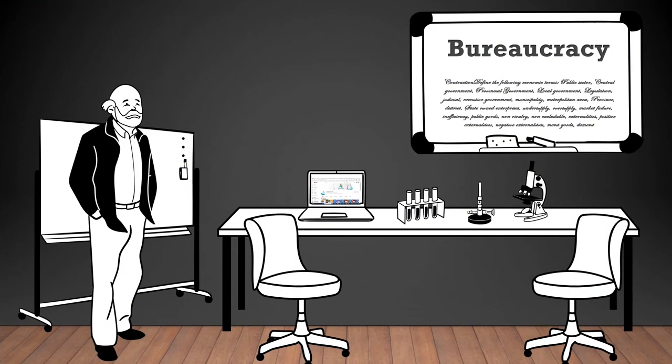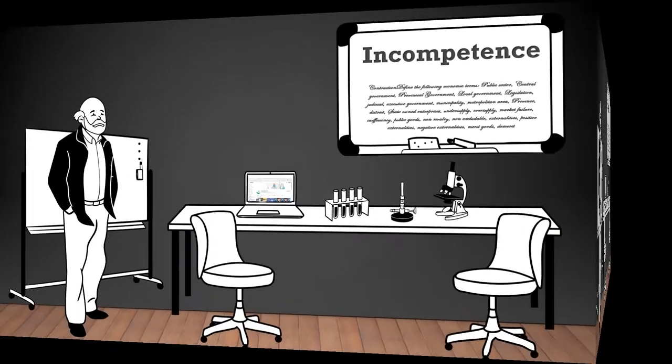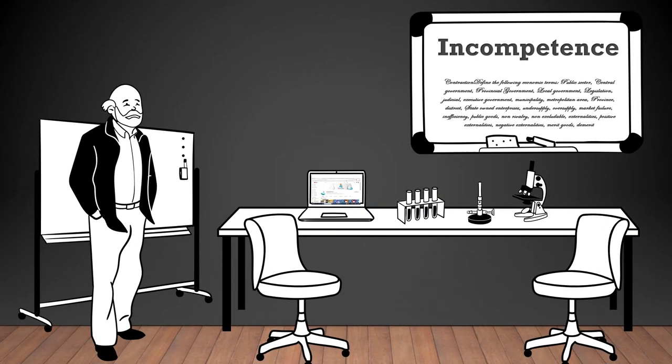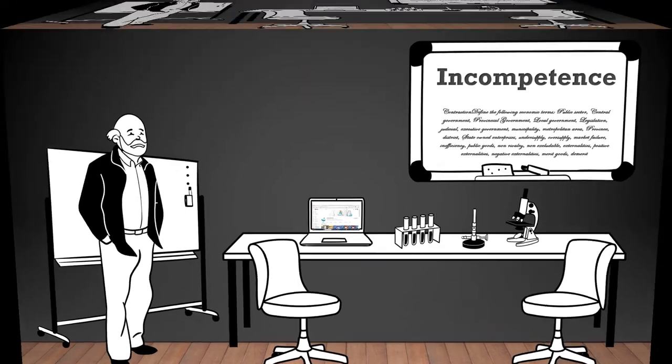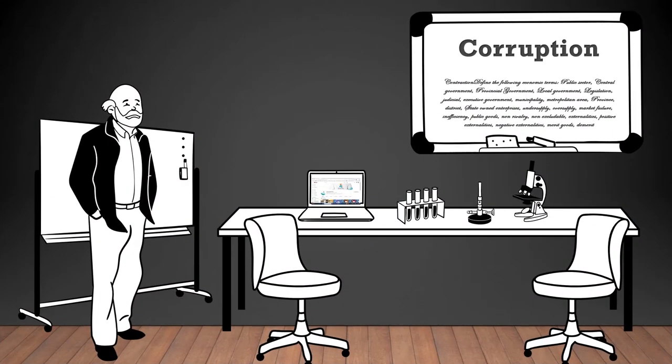Bureaucracy: a system of government or organization characterized by hierarchical structure, complex rules, and procedures, and often associated with slow decision-making and administrative inefficiency. Incompetence: lack of ability or skill to perform tasks effectively, which can lead to inefficiency and poor outcomes in governance and management. Corruption: the misuse of power or authority for personal gain, often involving bribery, embezzlement, or other unethical practices.